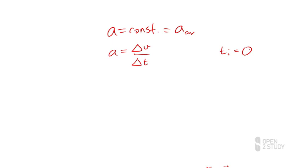That's the start of our time interval, and we'll call our final time simply t. Our initial velocity we'll write down as v with a subscript 0 — v₀ — our velocity at time 0. And our final velocity will simply be v, our velocity some time later.